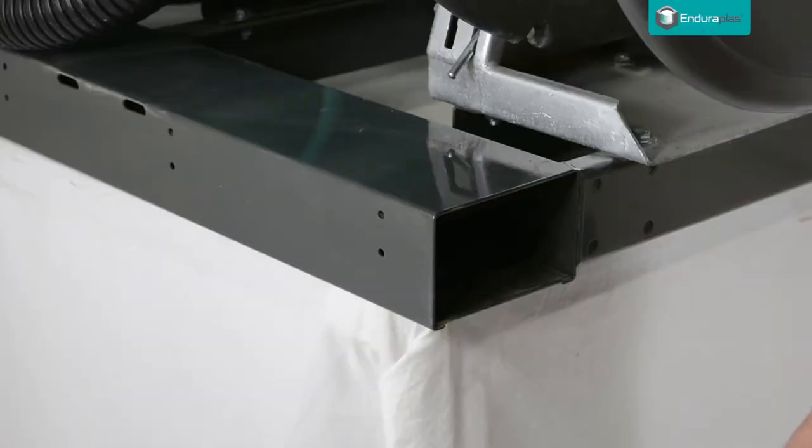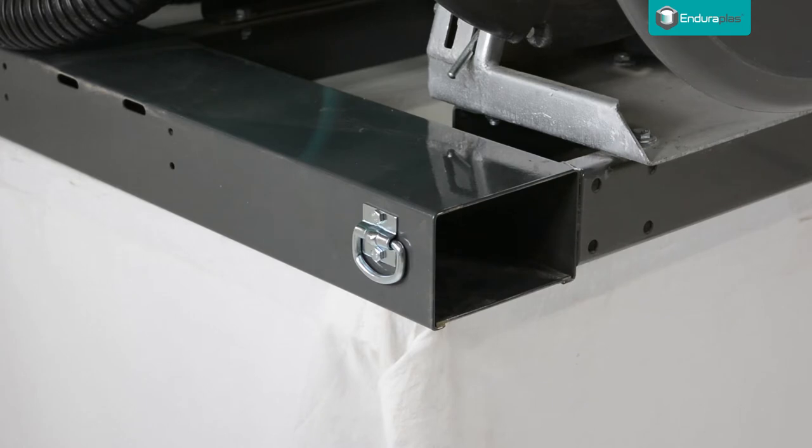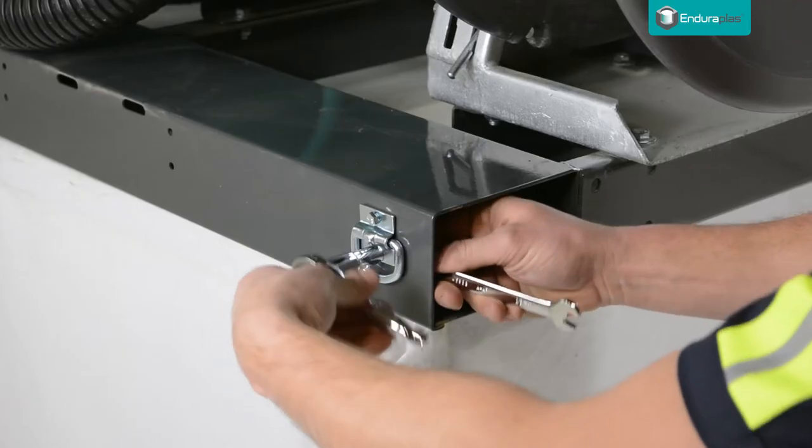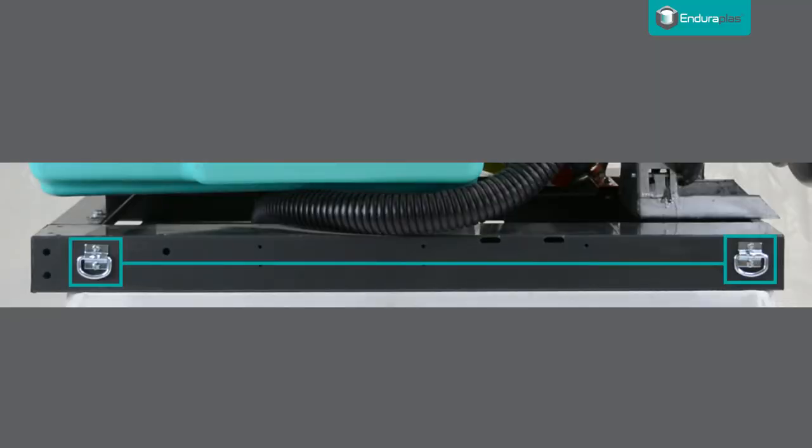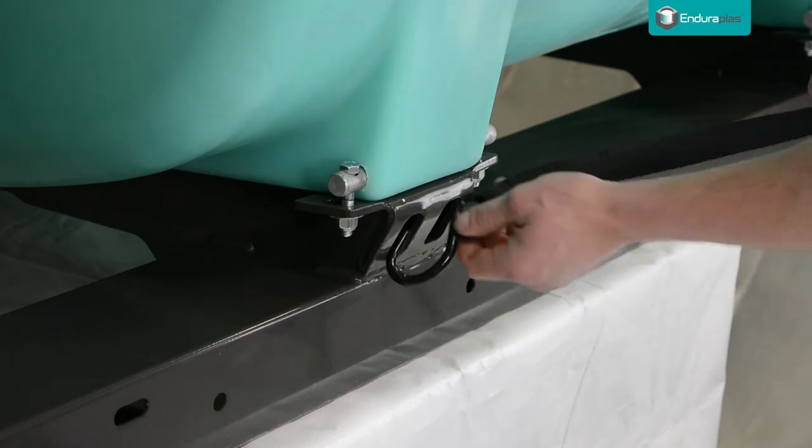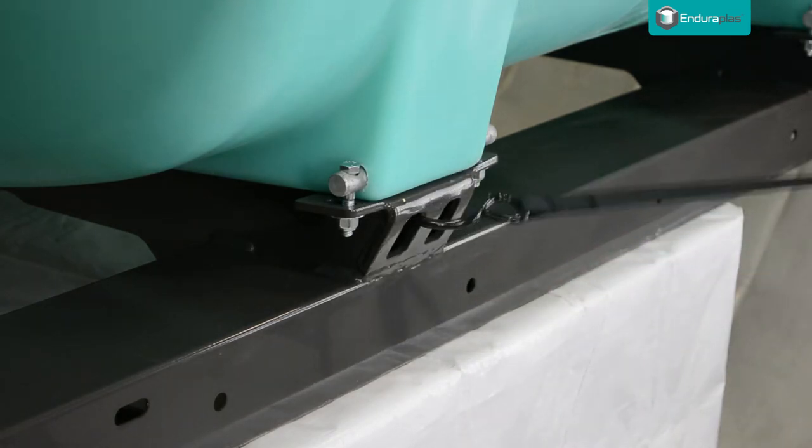On the 60 and 100 gallon units, you have the option of installing the D-ring tie-down system. If you wish to use it, find your desired configuration and mount two tie-down points on each side. On the 200 to 400 gallon models, there are built-in tie-down points on the frame.